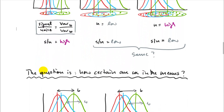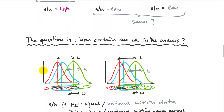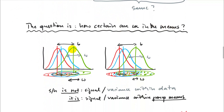We were asking a slightly wrong question. The right question is: how certain are we in the means of our groups? We don't really care about the distribution of the data; we wonder how certain we are in terms of the means. If my sample size is small, that certainty may not be very high — the within-variance is quite large. But with a big enough sample size, I'm quite certain in the precision of my means, so that within-variance is quite small.